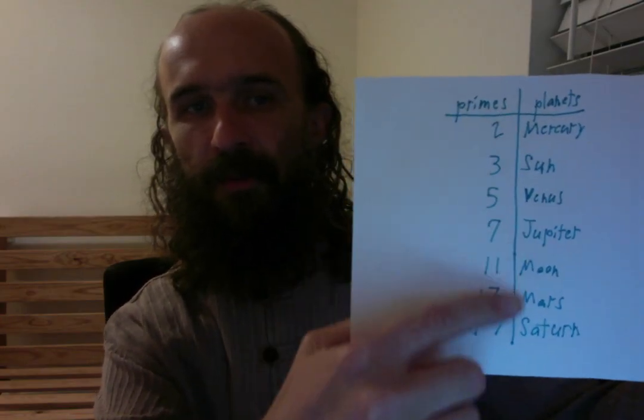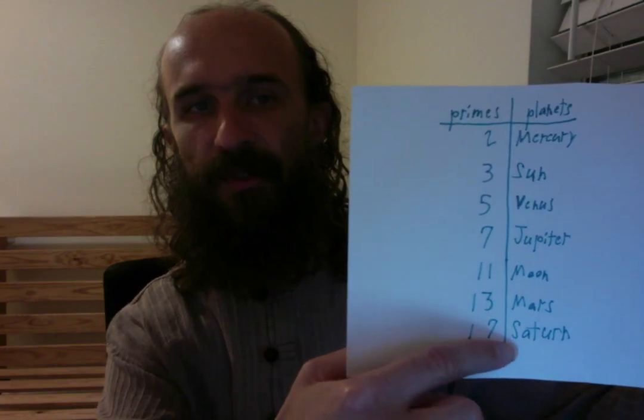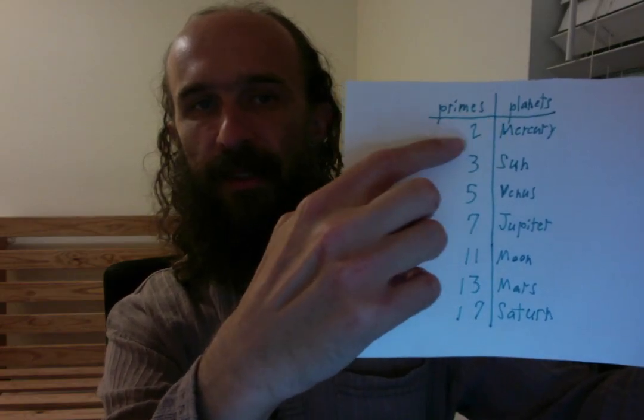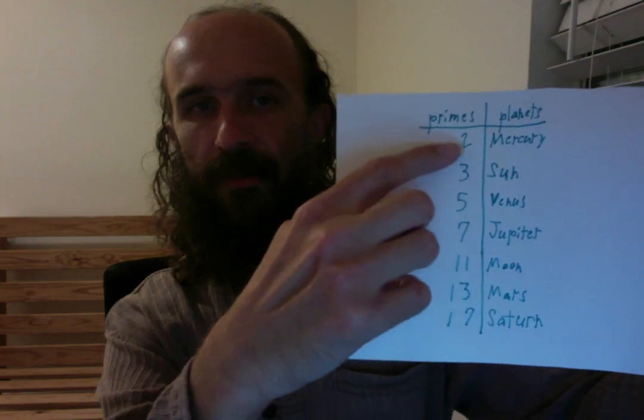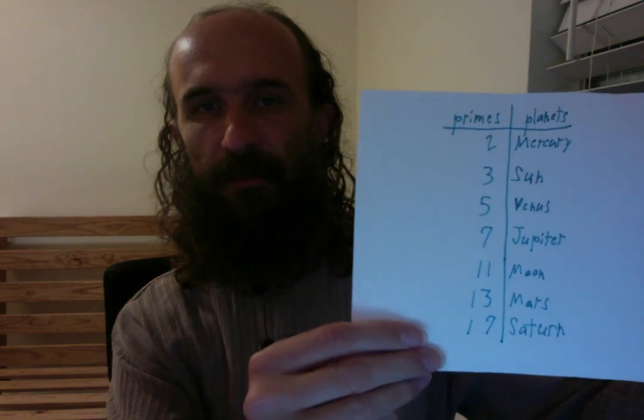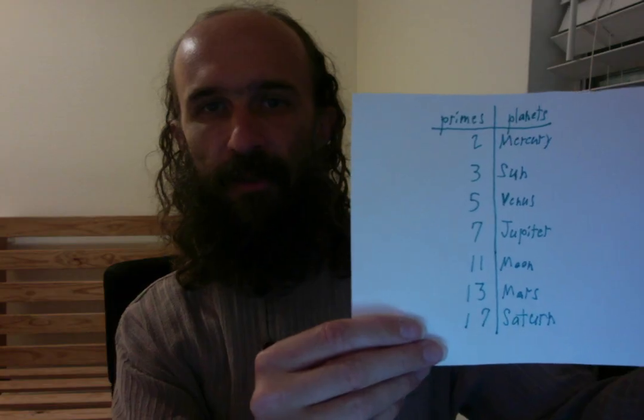And the seven principal planets: Mercury, Sun, Venus, Jupiter, Moon, Mars, and Saturn. So we could assign to any of the planets any one of these prime numbers. We could have done all kinds of different arrangements. In fact, if you count all of the possible arrangements, there are 5,040 possible ways to do it. Similarly, if we want to order the seven days of the week, we can start with Wednesday, we can start with Thursday, we can start with any of the seven days and give any of the six remaining days as the next day, and we would get the same number of possible orderings — 5,040.